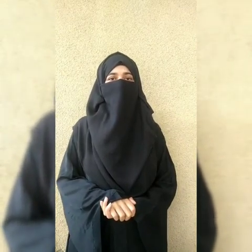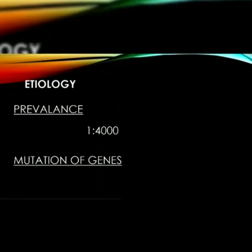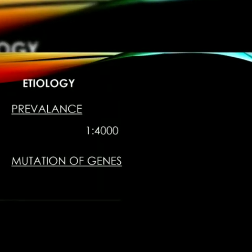Now we will discuss etiology. The prevalence of RP is 1 in 4000 people. It is a hereditary defect caused by mutation of different genes, and mutation occurs in more than 60 genes.